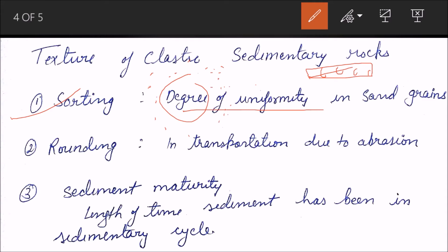Next is rounding. Rounding means how smooth are the edges. If it is very smooth and well rounded, that means the sediment or the grain has spent more time in transportation, and due to abrasion it has become well rounded. So more rounded the grain is, the more time it has spent in the transportation or the sedimentary cycle.